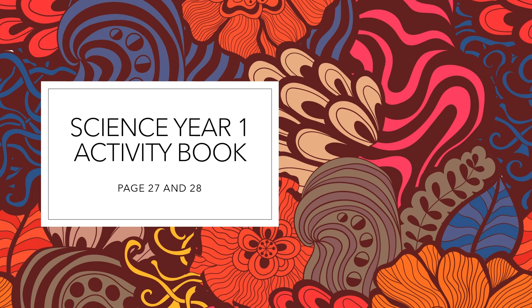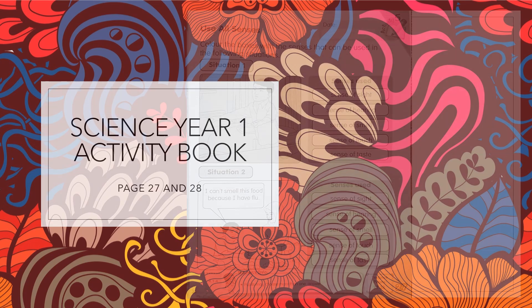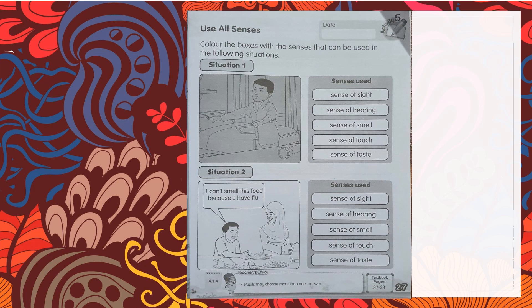Hi students, today we will discuss the exercises in the activity book, pages 27 and 28. Let us begin with the exercise on page 27. Use all sensors. Color the boxes with the sensors that can be used in the following situation. There are two situations here. Situation one is the same as in textbook page 37.